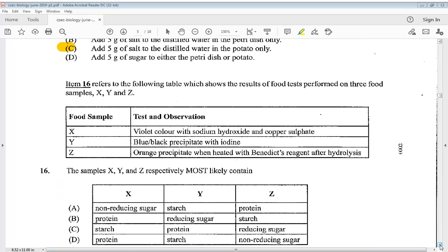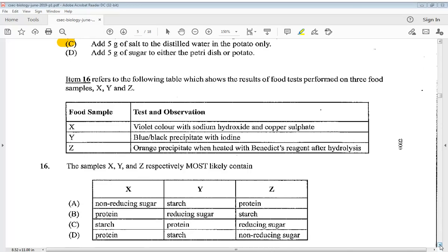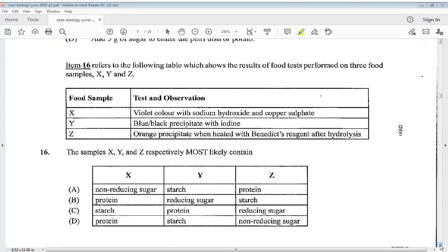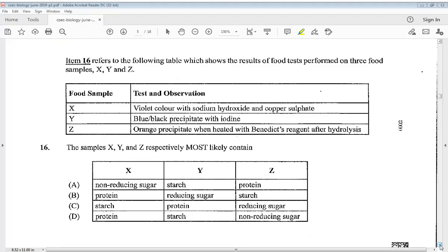Item sixteen refers to the following table which shows the results of food tests performed on three food samples X, Y, and Z. Sample X shows violet color with sodium hydroxide and copper sulfate, Y shows blue-black precipitate with iodine, Z shows orange precipitate when heated with Benedict's reagent after hydrolysis. The samples X, Y, and Z most likely contain: in X it is protein, in Y it is starch, and in Z it is non-reducing sugar. The answer is D.